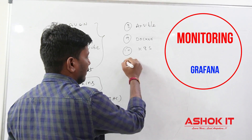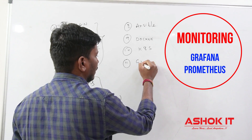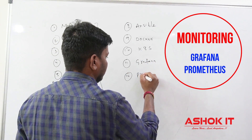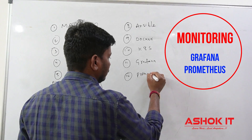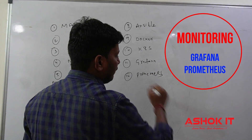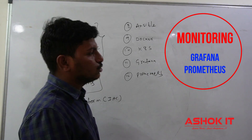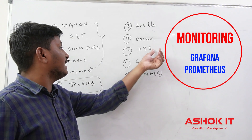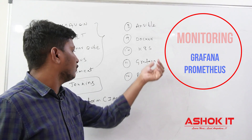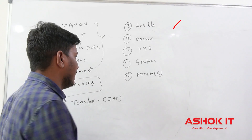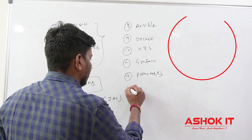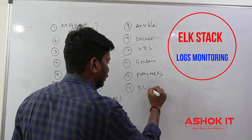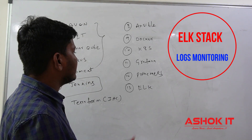Along with these things, we are going to use some monitoring tools like Grafana and Prometheus. Grafana and Prometheus are used to monitor our Kubernetes cluster, and the containers running in the cluster can be monitored using these tools.